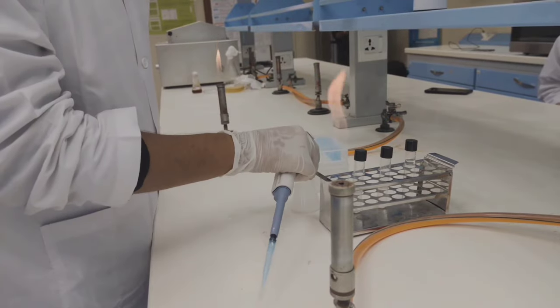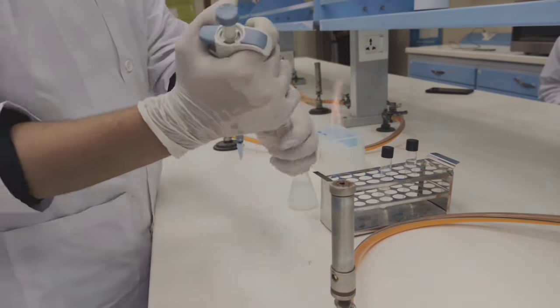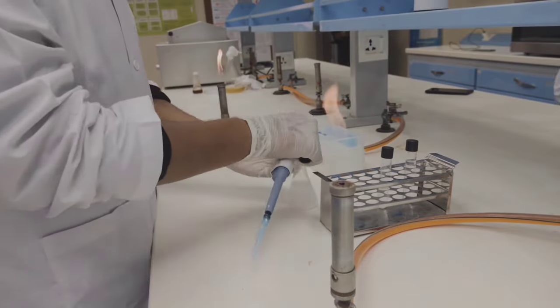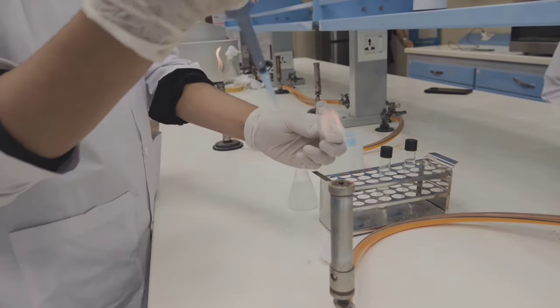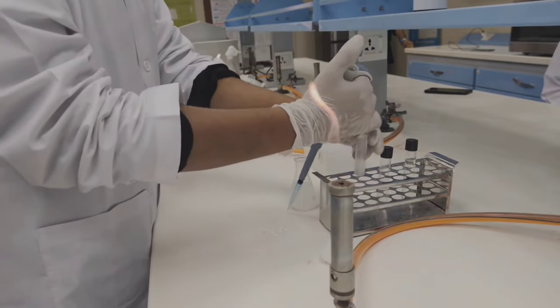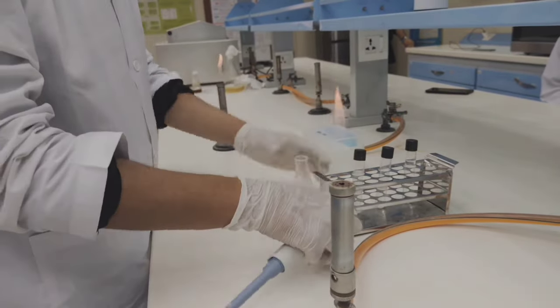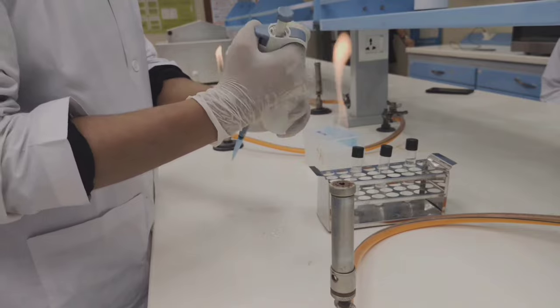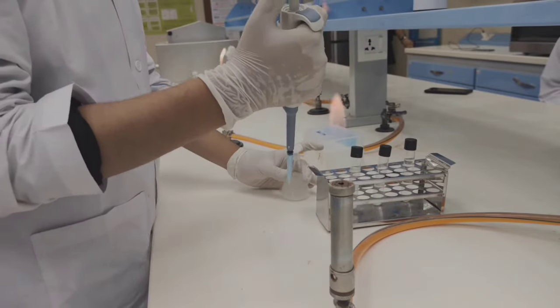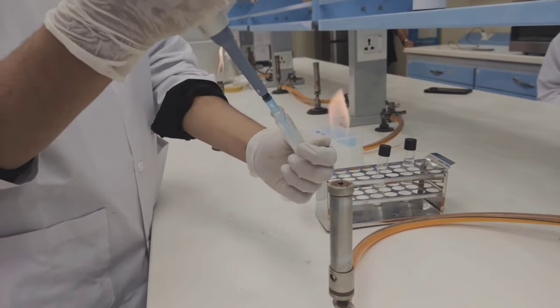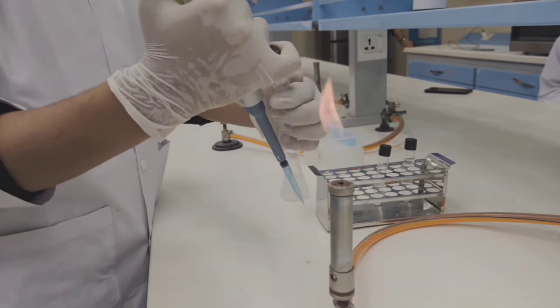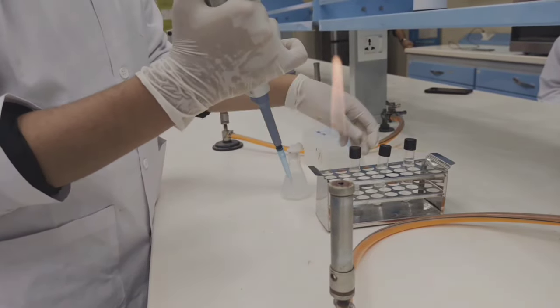Then we have to inoculate sample from that flask, from the diluted flask, to another test tube in which only diluent is present. Then we have to take one ml sample and inoculate in the other test tube. Now we have to shake that test tube to get the solution mixed well and seal all bottles to avoid contamination. Now we have to take one ml of solution from that test tube and then inoculate in a third test tube.